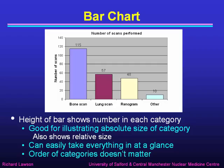So a bar chart is a good graphical way of describing the data. Here the height of each bar shows the number in each category. This is good if we want to illustrate the absolute size of the category, and it also shows the relative size. So we can see 115 bone scans and 57 lung scans, and see at a glance that lung scans are about half the number of bone scans, and renograms just a little less. In this way we can easily take everything in at a glance. Notice that in a bar chart like this the order of the categories doesn't matter — the meaning of the data is exactly the same.